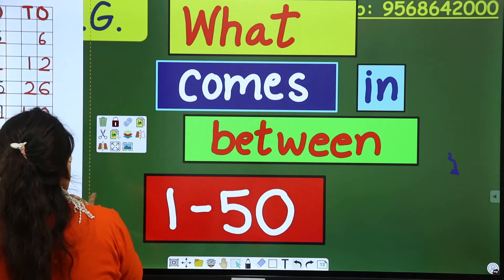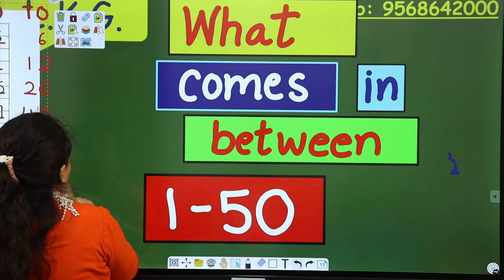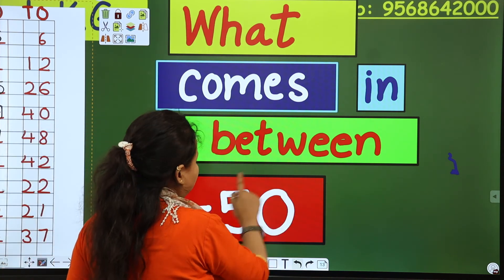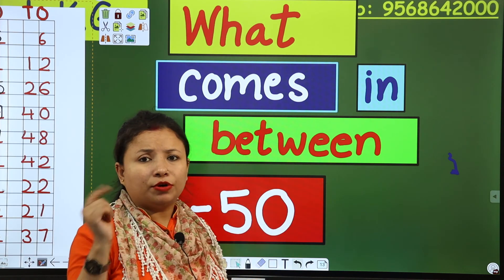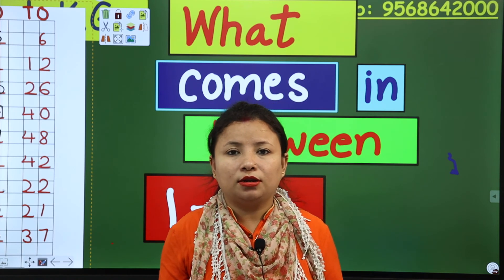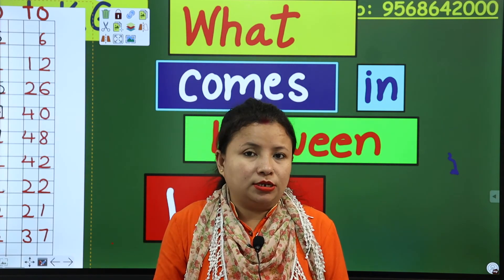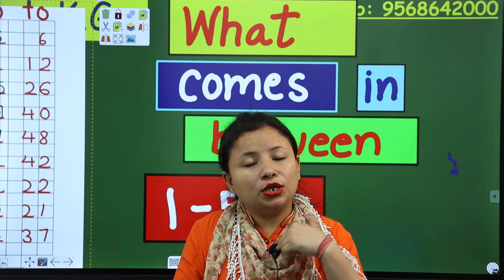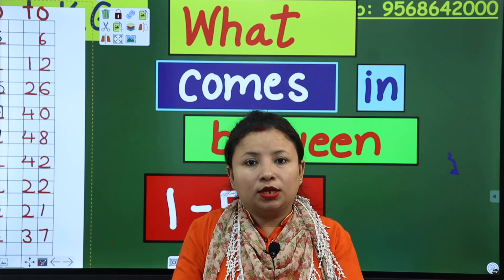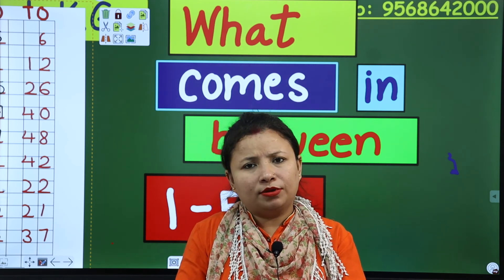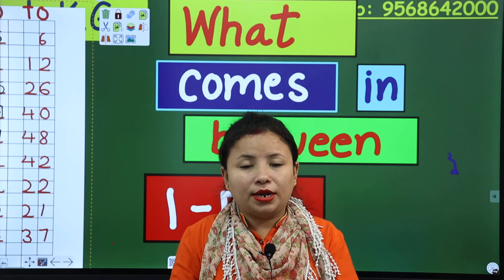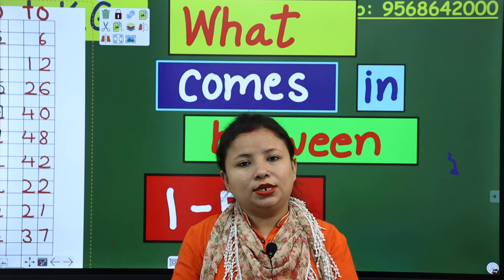So this is the concept of what comes in between — from 1 to 50. Now what you have to do is make an assignment. Take the picture and send it to me on WhatsApp. You also have to practice work in your rough notebook. Now it is time to leave, but I will come back soon with another concept. Till then, goodbye, take care of yourself, and keep watching.